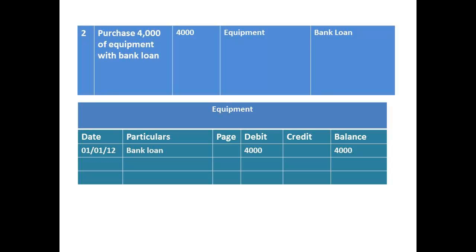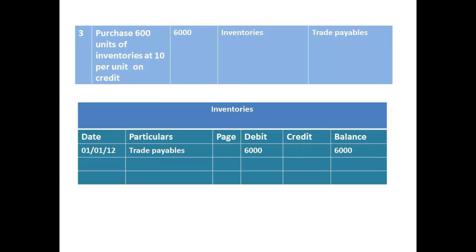Our second transaction was the purchase of equipment for the business using a bank loan. I have shown the entry here that would be made to the asset account of equipment, and the entry that would be made to the liability account of bank loan. Our third transaction was to purchase 600 units of inventories. The entry to the asset account of inventories is shown, and the corresponding entry to trade payables.